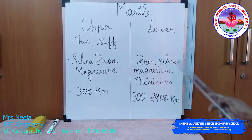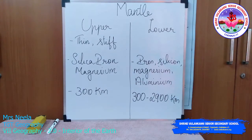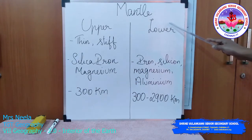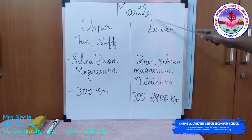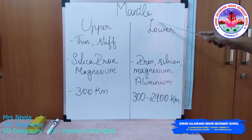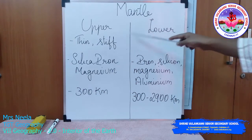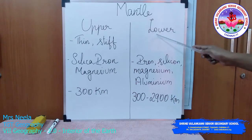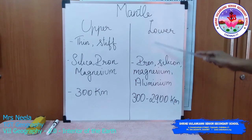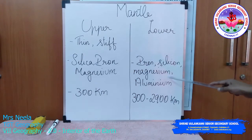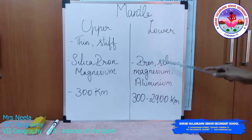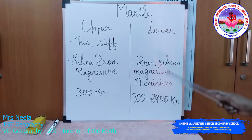The next layer is the mantle. It is about 2900 kilometers in thickness and is situated just below the crust. The layers are distinguished depending upon the viscosity of the components in the upper and the lower mantle.